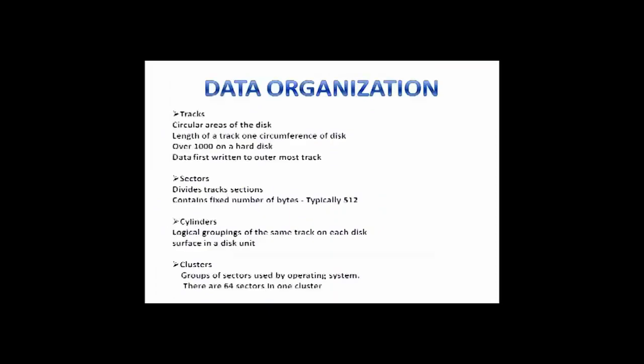Data organization in a hard disk drive. Tracks: These are circular areas of the disk. Length of one track is equal to the circumference of the disk. Data is first written to the outermost track. Sectors: Divides track sections. They contain a fixed number of bytes, which is typically 512. Cylinders: Logical groupings of the same track on each disk surface in a disk unit. Clusters: Groups of sectors used by the operating system. There are 64 sectors in one cluster.